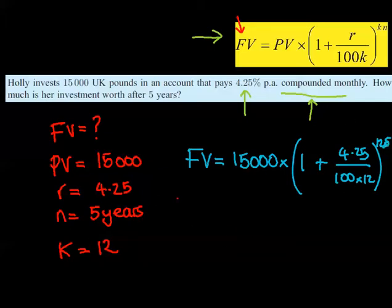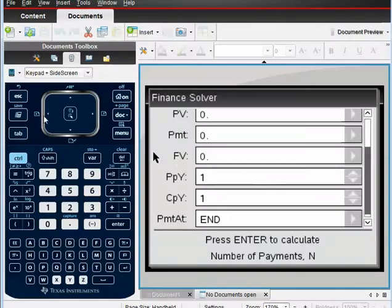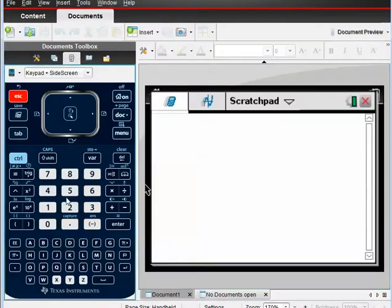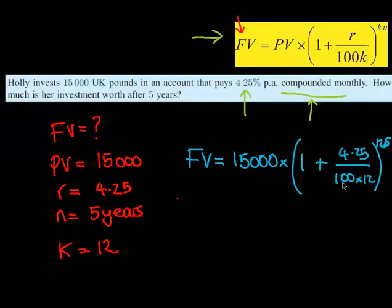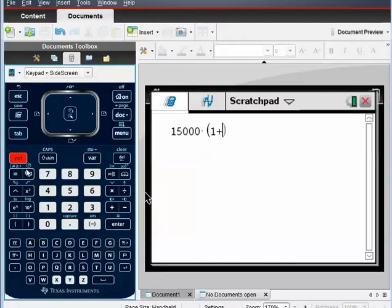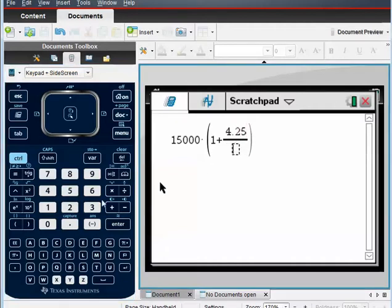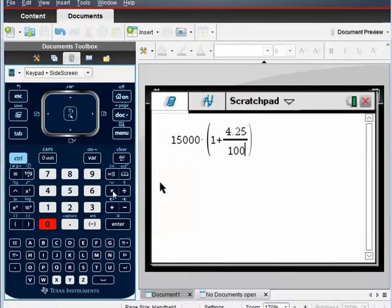So let's do it on the calculator now. So we need to do 15,000 times bracket, 1 plus. And let me just look at the fraction again. The fraction is 4.25 divided by 100 times 12. So it's a good idea to use the fraction template. So control, divide, and then it's 4.25. In here, it's 100 times 12.